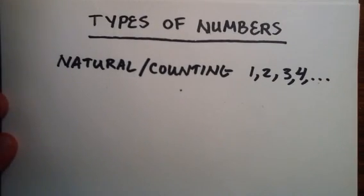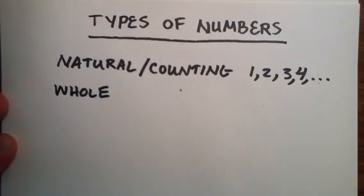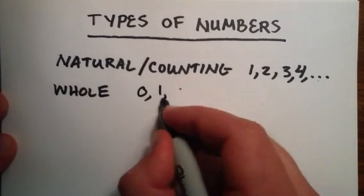The next type of number would be the whole number. Now, the whole number contains all the counting numbers, plus it also contains the number zero.